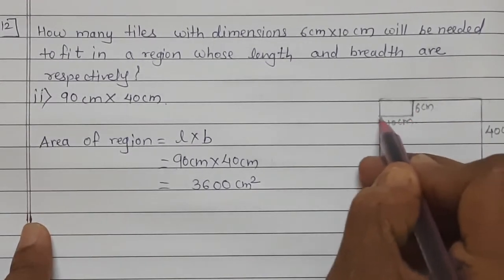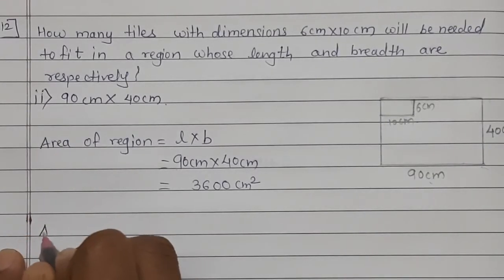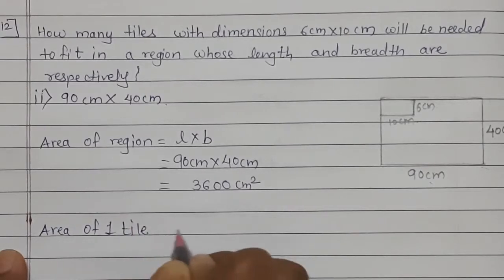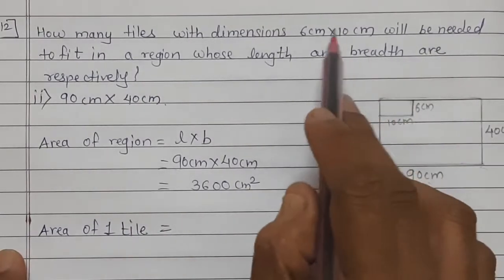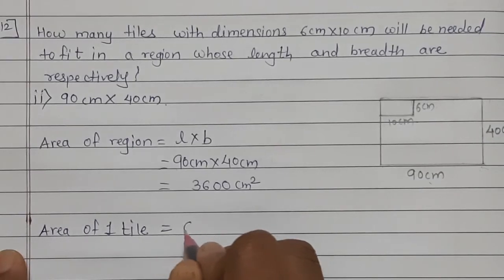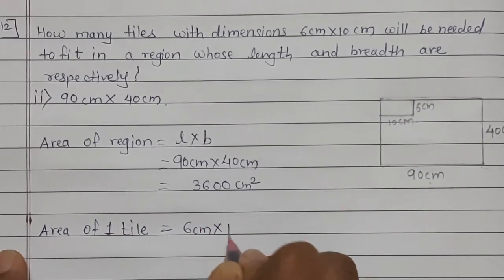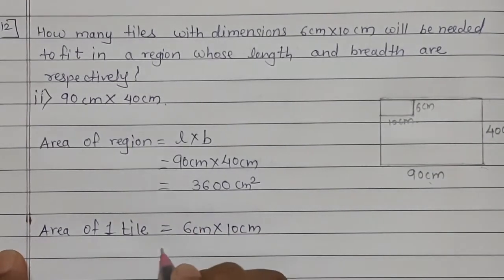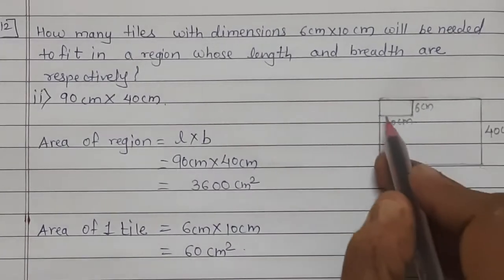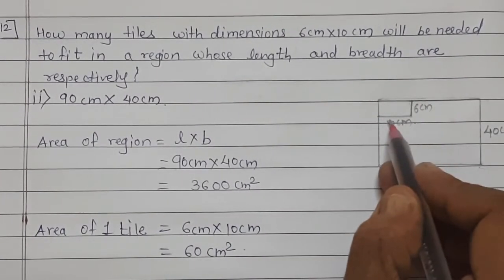Now we need to find the area of one tile. The dimensions are given as 6 cm by 10 cm, so area of one tile equals 6 cm multiplied by 10 cm. 6 times 10 is 60, so the area of one tile is 60 square centimeter.